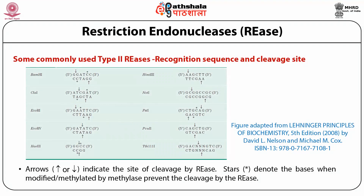This is an example of some commonly used Type 2 restriction endonucleases, their recognition sequences and cleavage sites. Enzymes such as BamHI, KpnI, EcoRI, EcoRV, HaeIII, and HindIII all recognize a small stretch of DNA sequence, usually 4 to 6 or 8 base pairs long, and make cuts within the recognition sequence as shown by arrows. Wherever you see a star, it represents that if that position is methylated, the restriction endonuclease does not work.